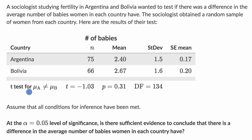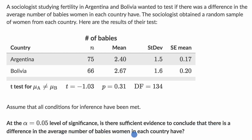They give us the t-test for the means being different — we were able to calculate these statistics. Assume that all conditions for inference have been met. At the alpha equals 0.05 level of significance, is there sufficient evidence to conclude that there is a difference in the average number of babies women in each country have? Pause this video and see if you can answer that.